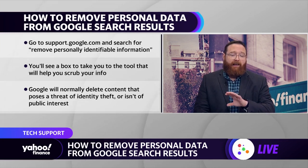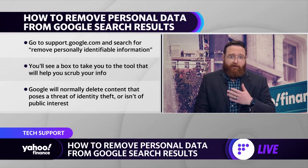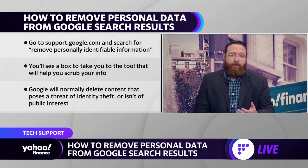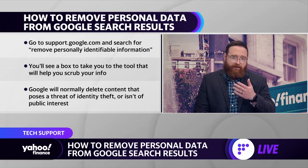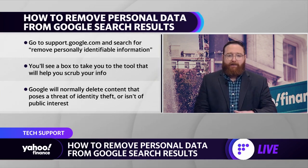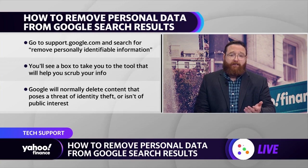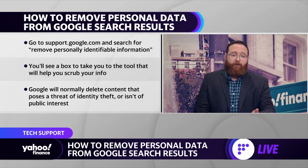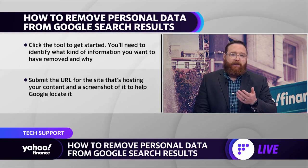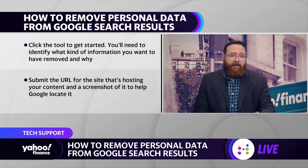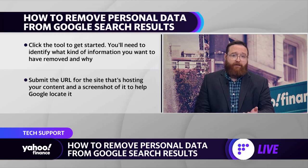look for 'remove personally identifiable information.' Once you do that search, you're going to get a response box that explains what that will allow you to do. It will basically say you can remove your personal information from Google here. Click that box, and then you'll end up seeing this super long document saying essentially that you need to go to the other website that may be hosting your information, get in touch with them, and that it's up to Google whether or not they will reply to your request to have information taken down.